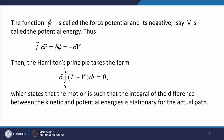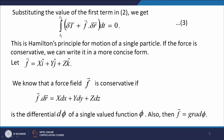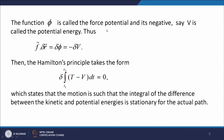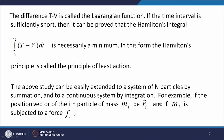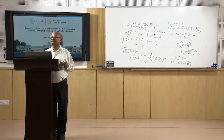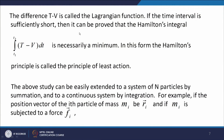Hamilton's principle, which was integral from t₁ to t₂ of [δT + F · dr] dt = 0, now takes the form: δ ∫(t₁ to t₂) (T − V) dt = 0. This states that the motion is such that the integral of the difference between kinetic energy T and potential energy V is stationary. The difference T − V is called the Lagrangian function. If the time interval is sufficiently short, it can be proved that Hamilton's integral is necessarily a minimum, and in this form Hamilton's principle is called the Principle of Least Action.